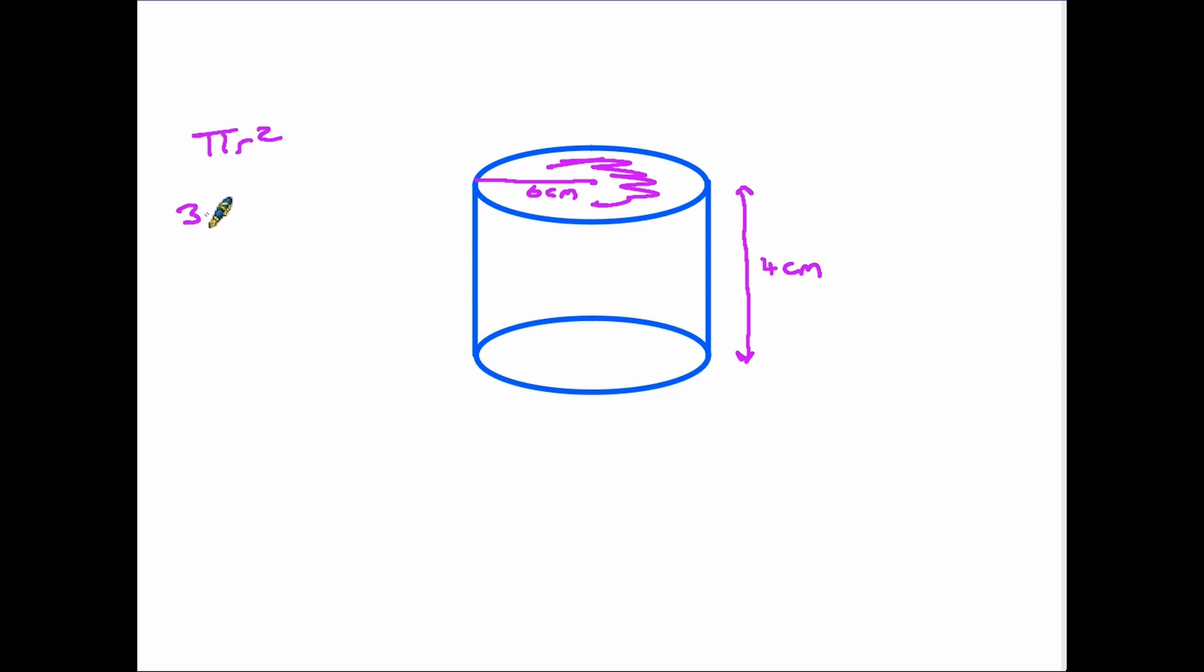So πr² is 3.142 times 6 squared, which equals 3.142 times 36. Get your calculator out—that will come to 113.112 centimeters. This is area, so centimeters squared. This time I'll leave it with three decimal places. So now we have the area of the end of the cylinder.